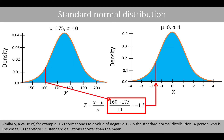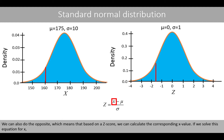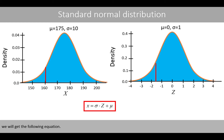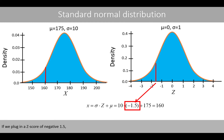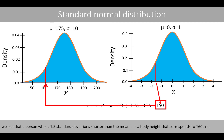Similarly, a value of 160 centimeters corresponds to a z-score of negative 1.5 in the standard normal distribution, meaning a person 160 centimeters tall is 1.5 standard deviations shorter than the mean. We can also do the opposite: based on a z-score, we can calculate the corresponding x-value by solving the equation for x. For example, a z-score of negative 1.5, combined with the standard deviation of 10 and mean of 175, gives a body height of 160 centimeters. This was the end of this lecture about the normal distribution. Thanks for watching.